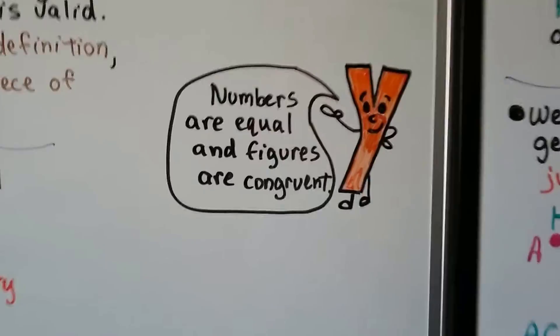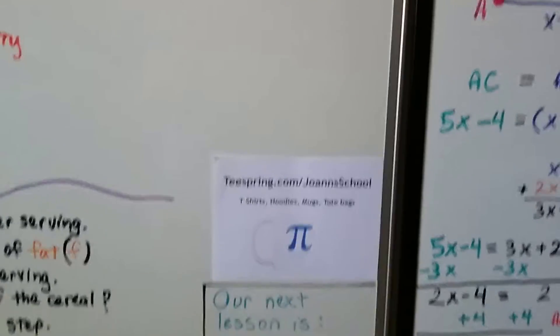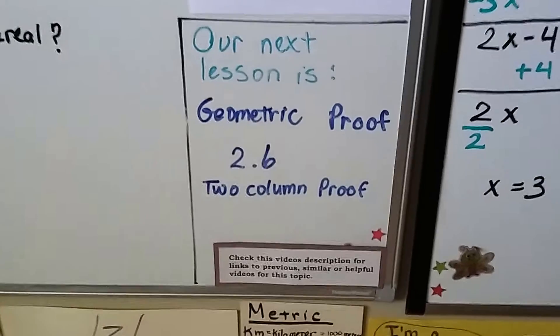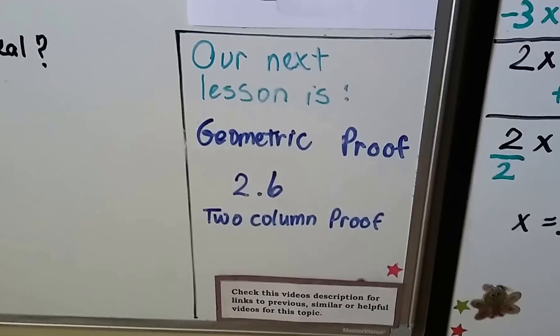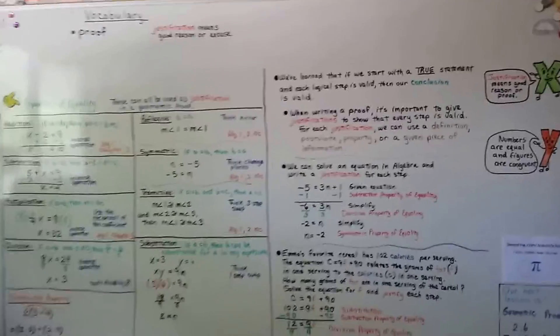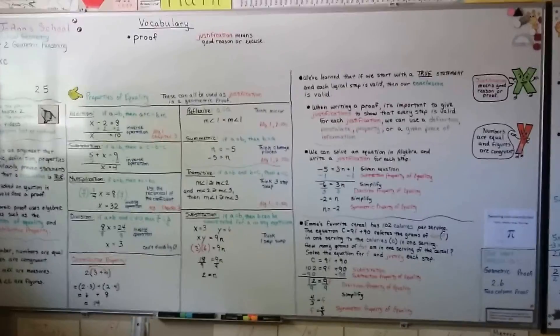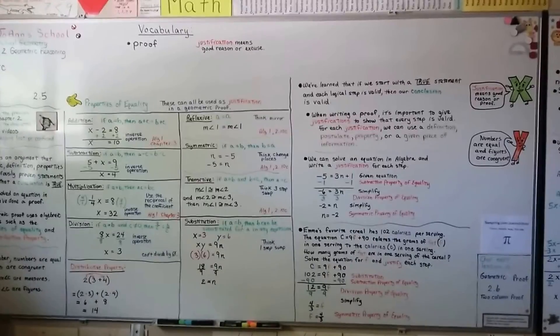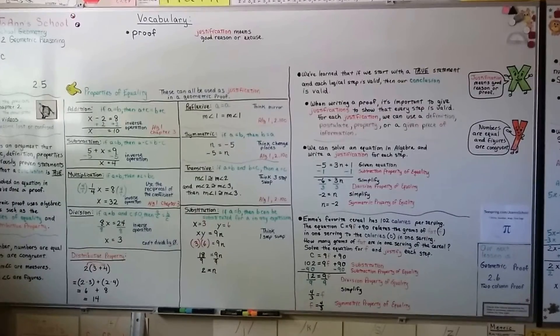Remember that numbers are equal and figures are congruent. Segments and angles are figures. Our next lesson is geometric proof, 2.6, where we're going to do two-column proofs. There are a lot of notes in this one — if you need to, go back and re-watch the video and pause it. I hope you're doing well. I'm proud of you. I'll see you next time.